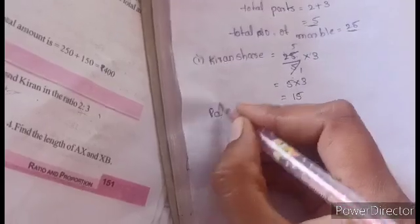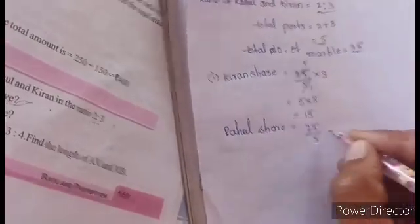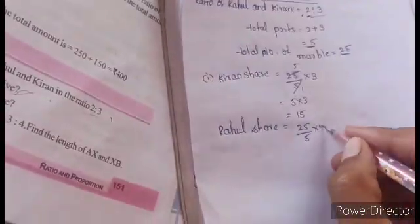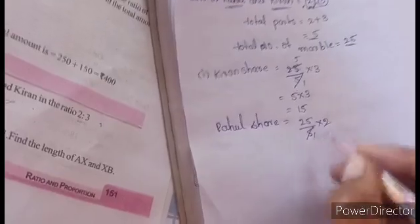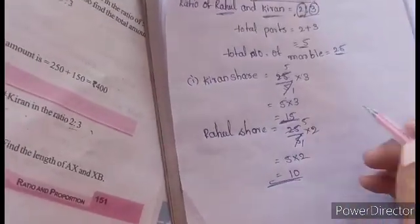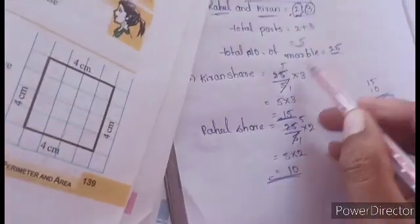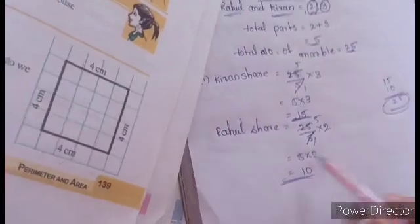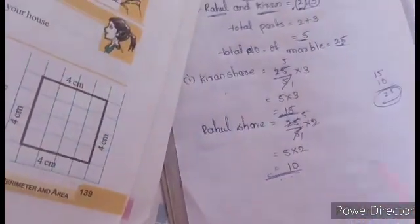Rahul's share: 25 by 5 into Rahul's ratio 2. So 5 into 2 is 10. Rahul's share is 10 marbles and Kiran's share is 15 marbles. Adding them: 10 plus 15 equals 25 marbles total. So Kiran gets 15 marbles and Rahul gets 10 marbles.